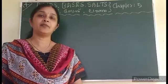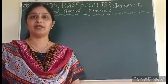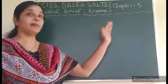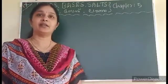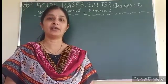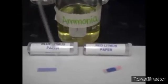This is the red litmus paper and this is the blue litmus paper. This is used to identify acid and base. Ammonia solution is tested using two litmus papers. Ammonia is a basic solution.